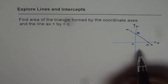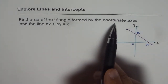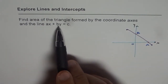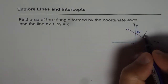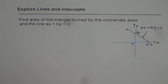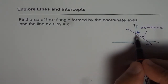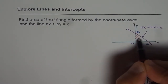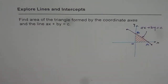Let us read the question once again: find the area of the triangle formed by the coordinate axes and the line ax plus by equals to c. The line we have sketched is ax plus by equals to c, so the triangle formed is triangle OAB. Let me shade this triangle — we need to find the area of this shaded triangle.